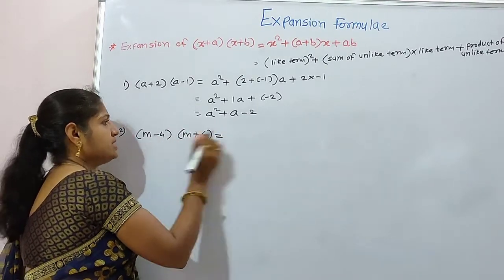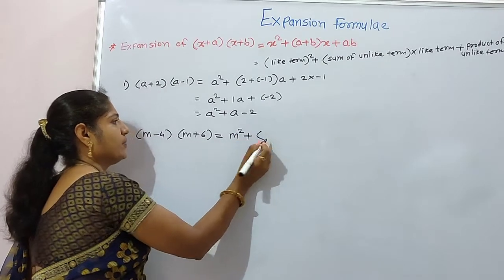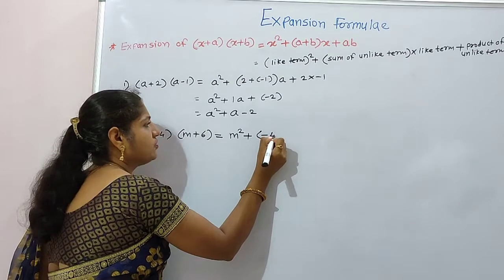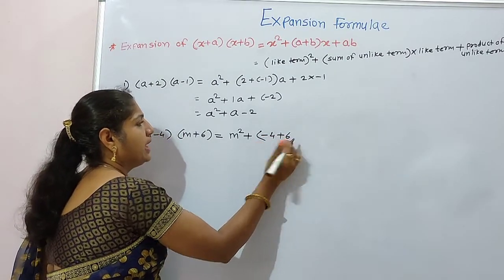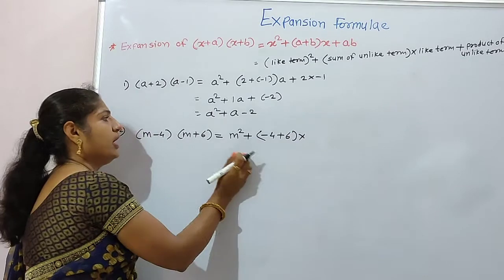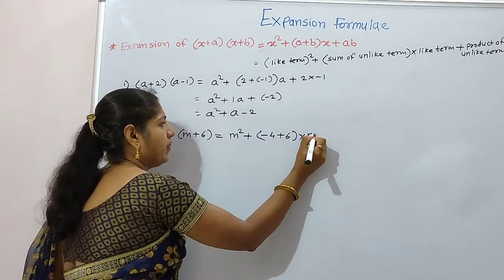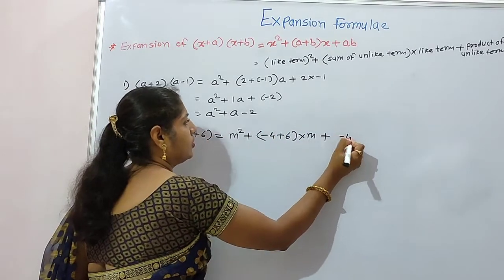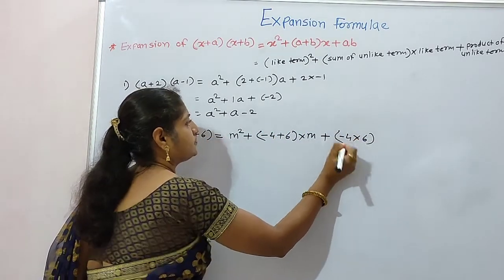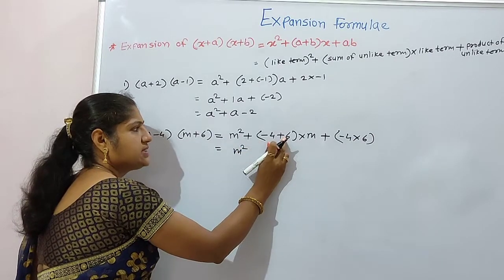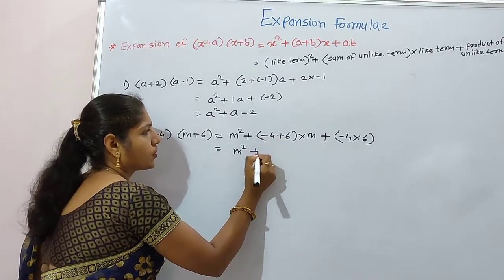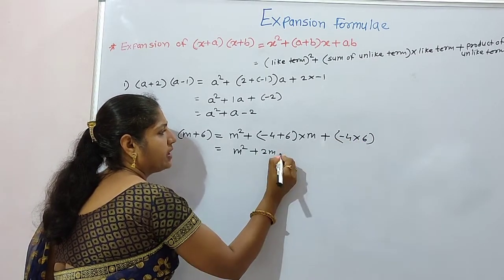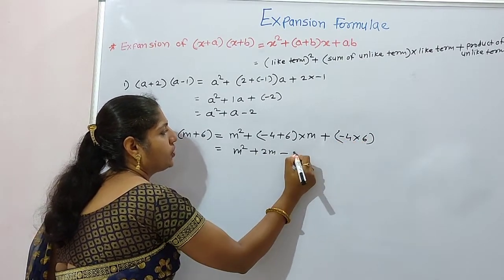By our formula: like term squared is m square, plus the sum of unlike terms — that is minus 4 plus 6 — multiplied by like term m, plus the product of unlike terms, that is minus 4 into 6. So: m square plus 6 minus 4 equals 2, giving plus 2m. Multiplication of a positive and negative number is negative, so 6 into 4 equals 24, giving minus 24.